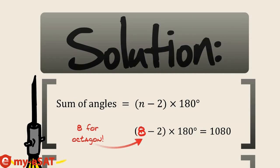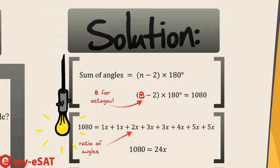Now we're given a ratio of all the angles. So to figure out the smallest angle measure, multiply each ratio by x, add them all together, set them equal to 1080, and solve for x.